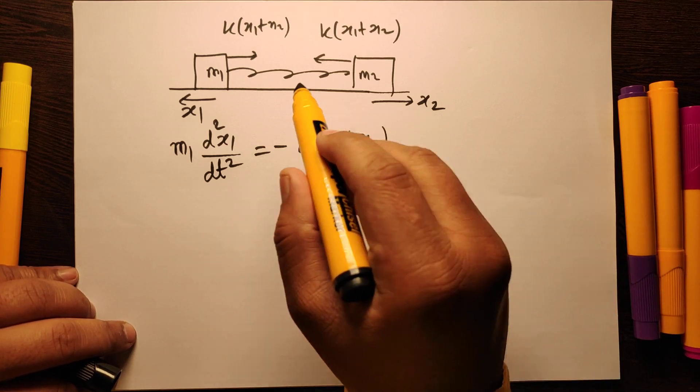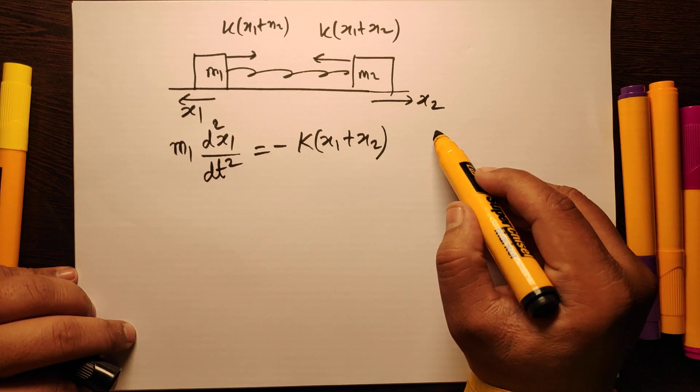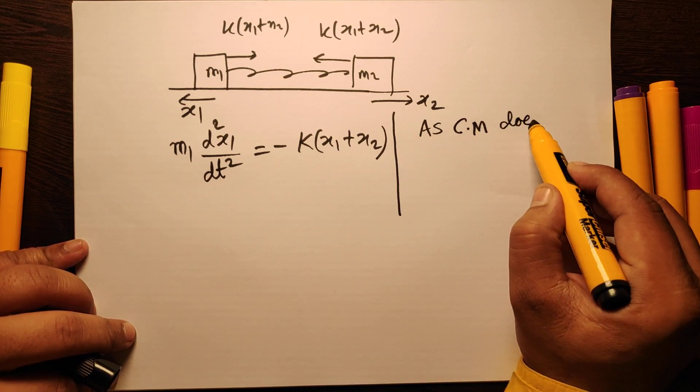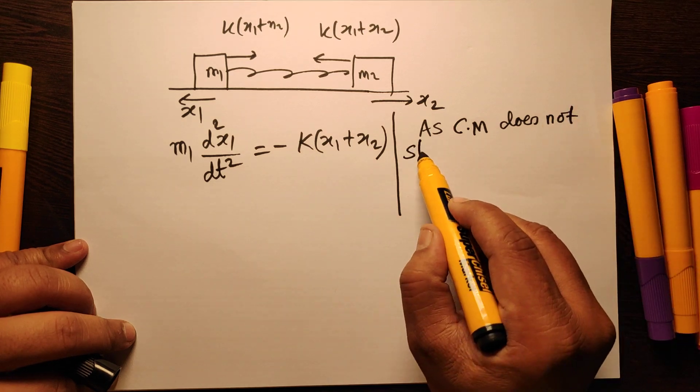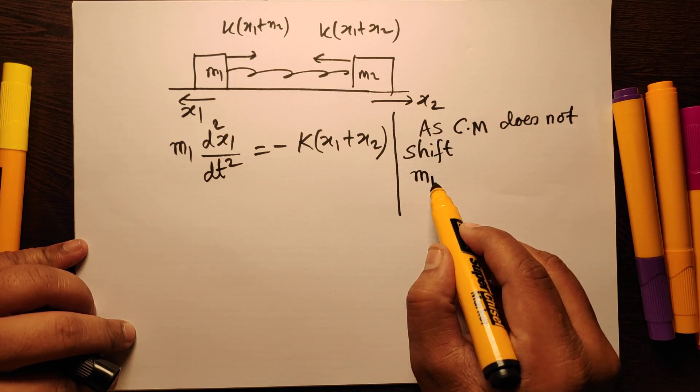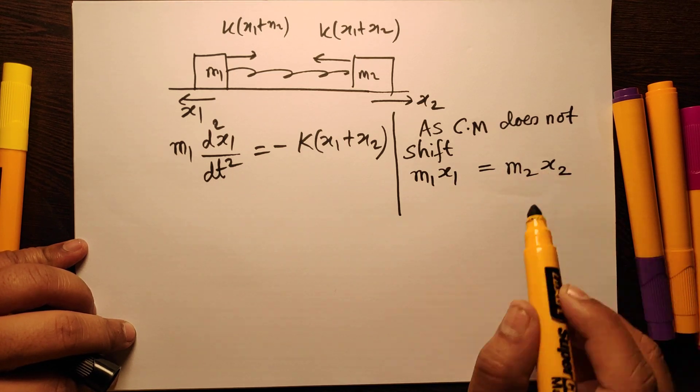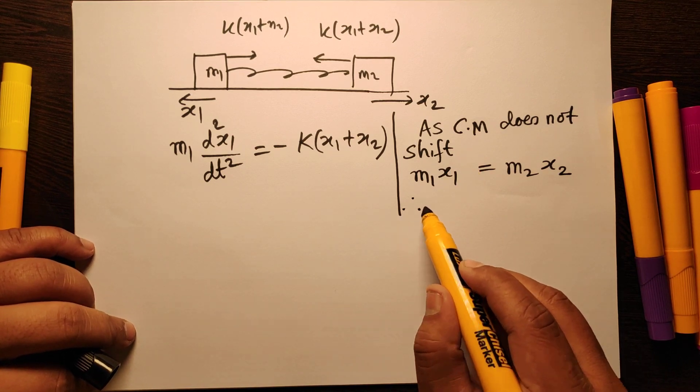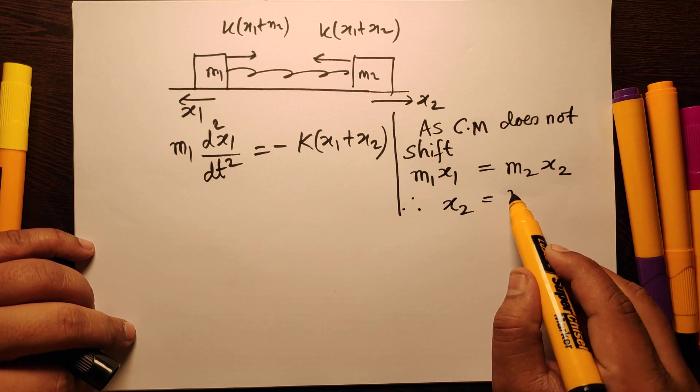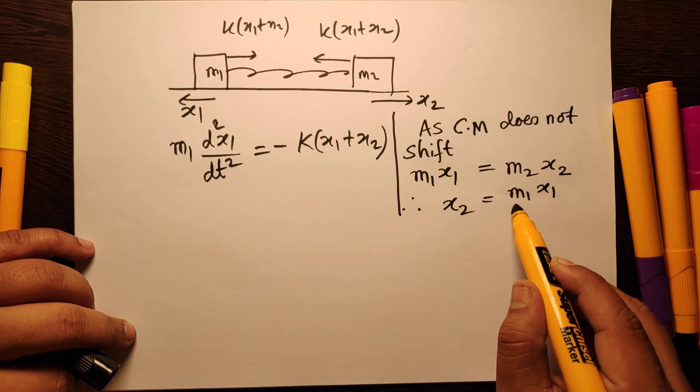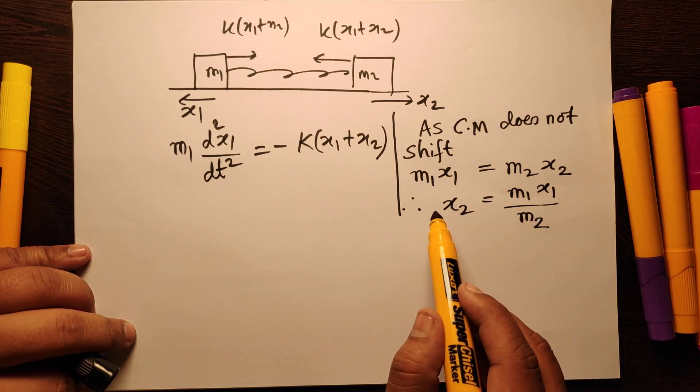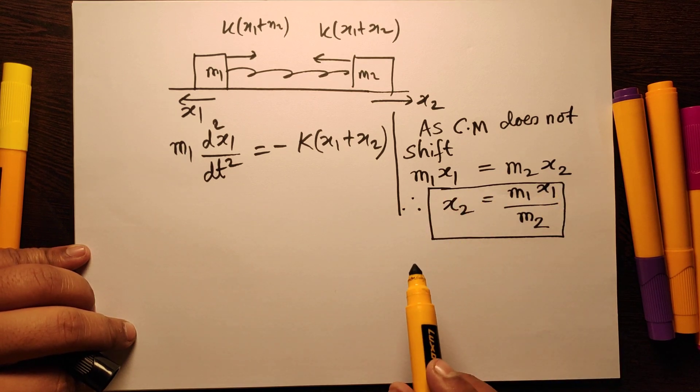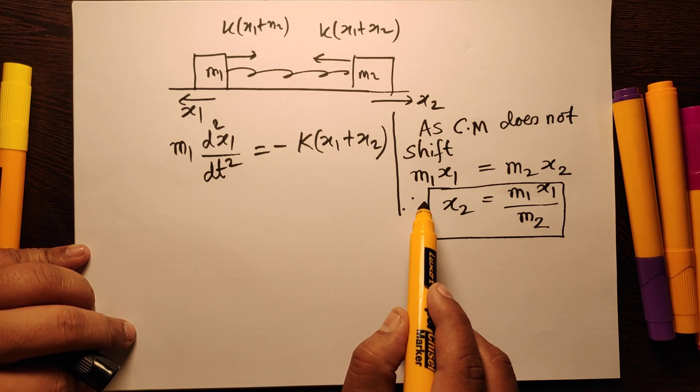Now, as the center of mass of the system does not shift, we can write m1·x1 equal to m2·x2. This is from our concept of center of mass. Therefore, I can write x2 equal to m1·x1/m2. Now I can substitute this value of x2 so that I can get a differential equation in x1 only.